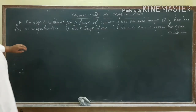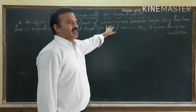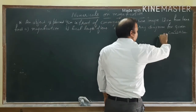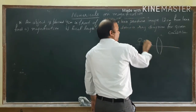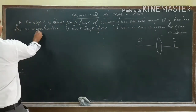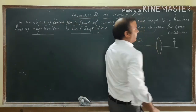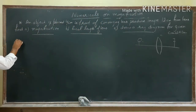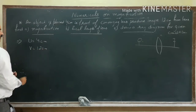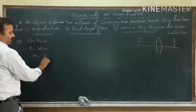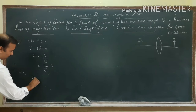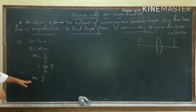In the next example, an object is placed 4 centimeters in front of a converging lens, which is a convex lens, and the image is produced 12 centimeters from the lens. We have to find the magnification, the focal length, and draw the ray diagram. It is given that U equals 4 centimeters and V equals 12 centimeters. Magnification is V by U, so that is 12 divided by 4, which gives magnification equal to 3.